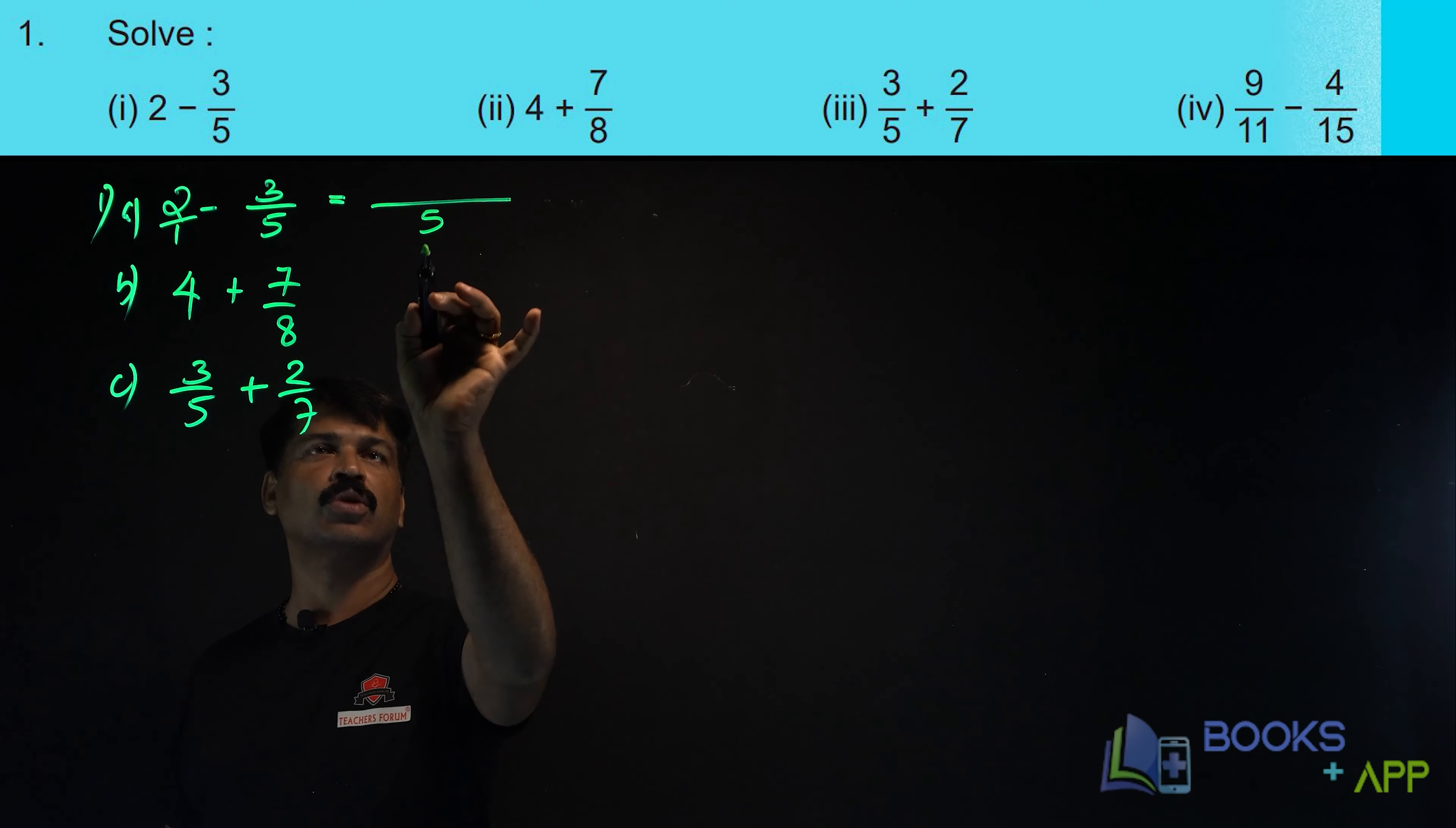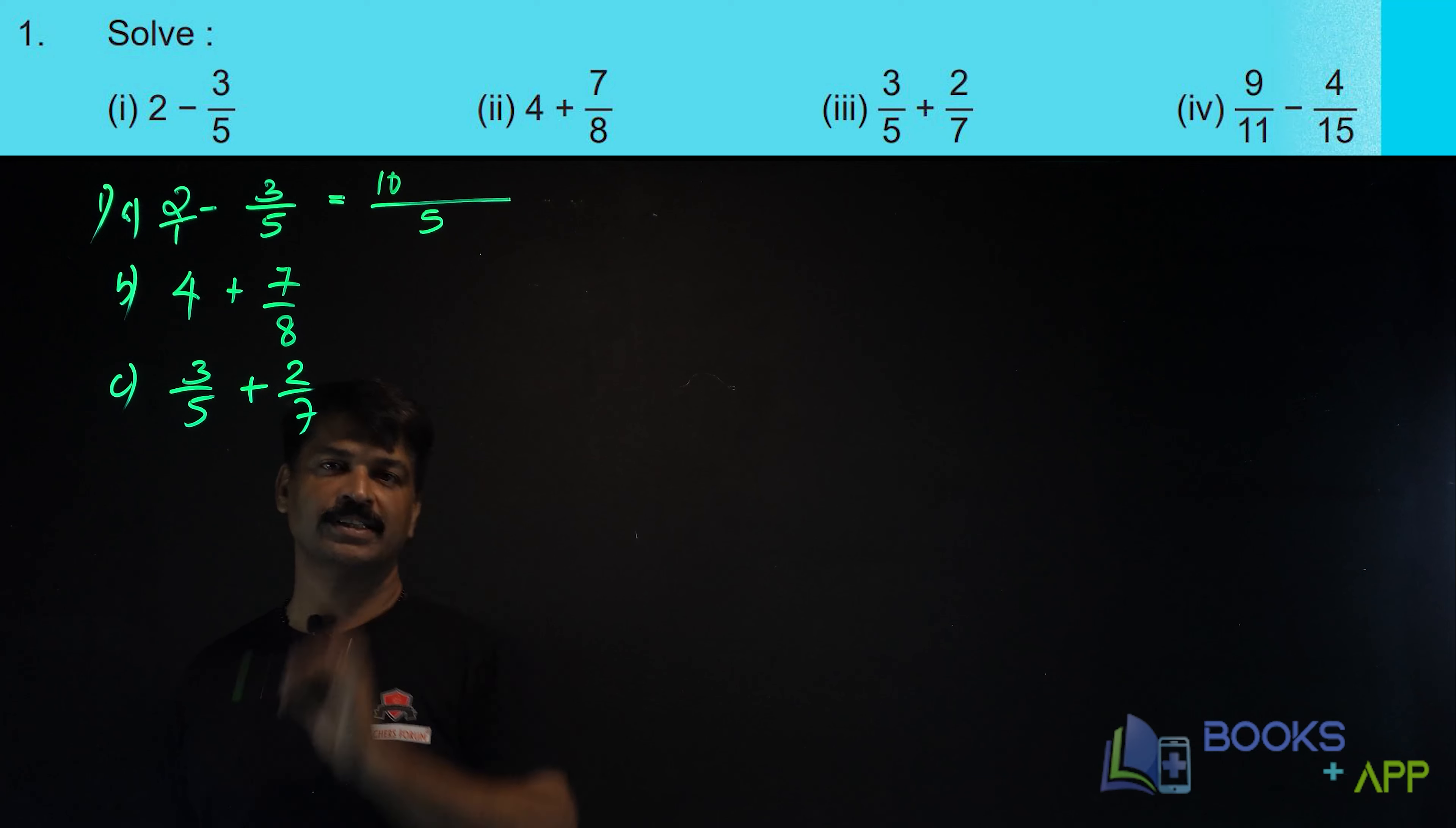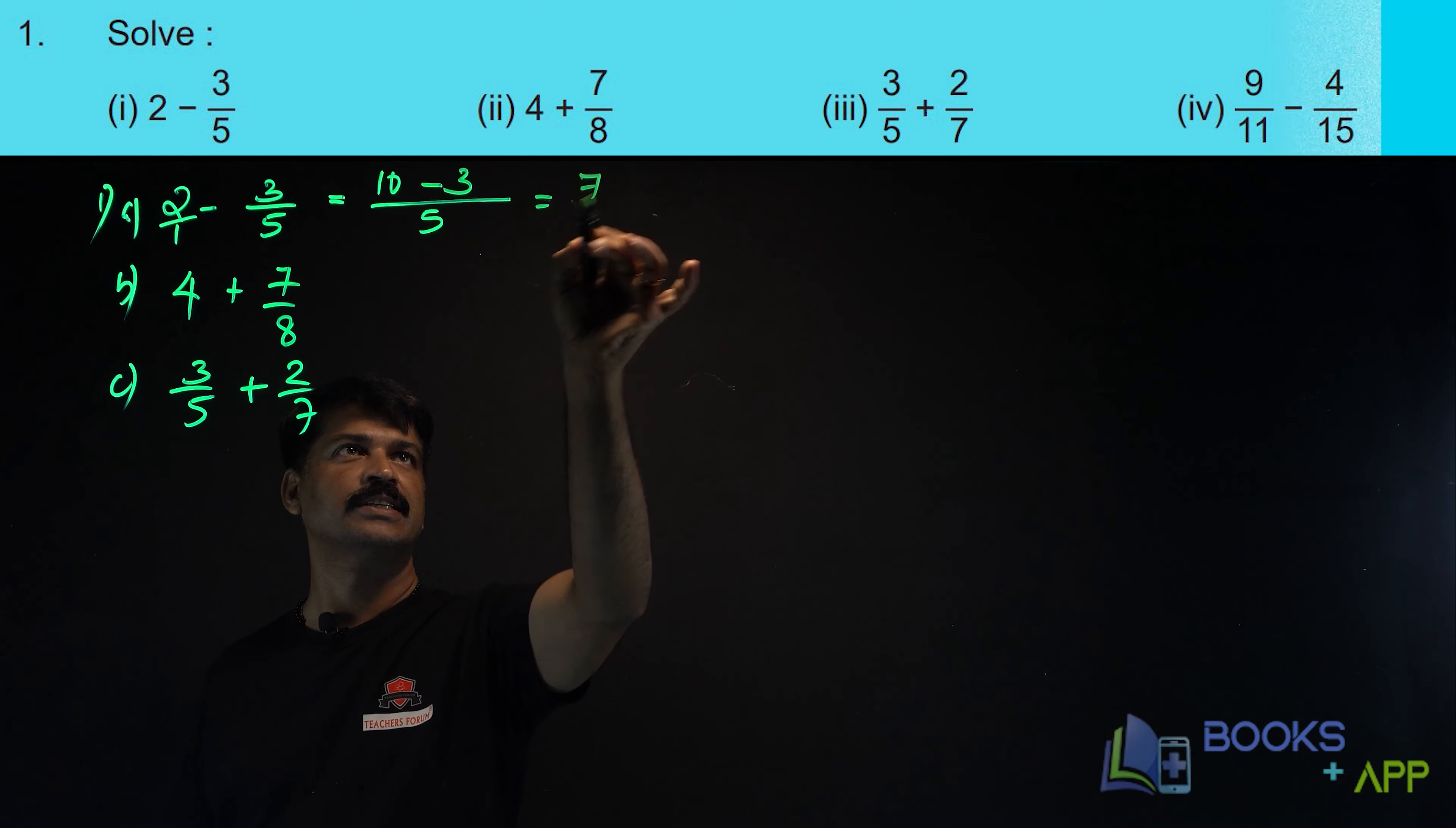So, instead of 1, you write 5. 1 into 5 is 5. So, with that 5, you should multiply 2. What is the answer? 2 into 5, 10. 5 into 1 is 5. 3 into 1 is 3. So, the answer is 10 minus 3. That is 7 by 5.